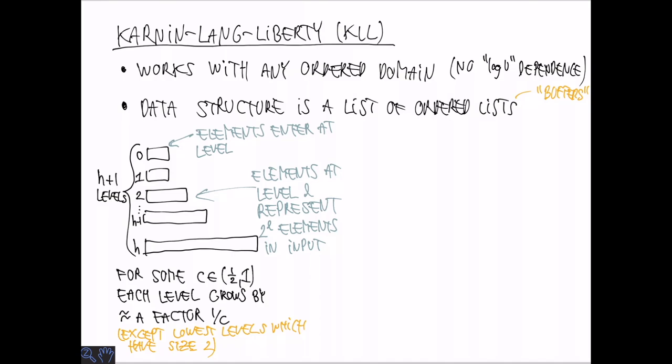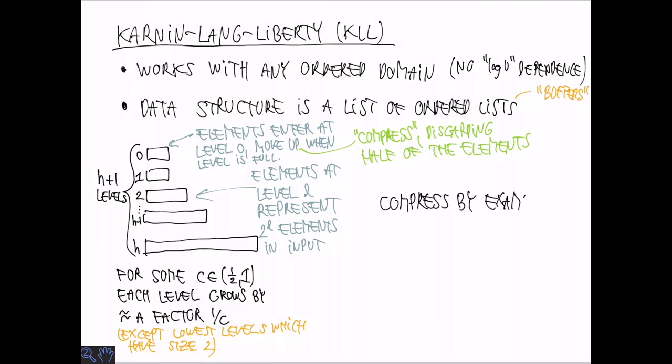So the intuition is that elements at level L are going to represent 2 to the L elements in the input. We can insert new elements at level 0, corresponding to 2 to the 0 elements, and then we are going to move up elements to the next level when the level is full. And this is a so-called compress or compaction step. And what we need to do here is to discard half of the elements. In this way, each element that moves up corresponds to twice the number of elements as before.